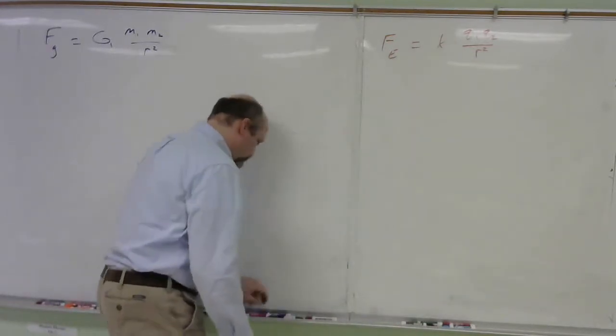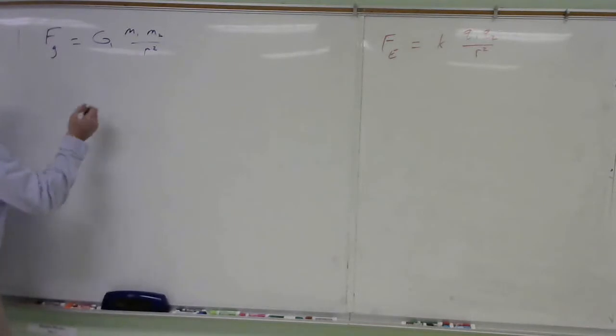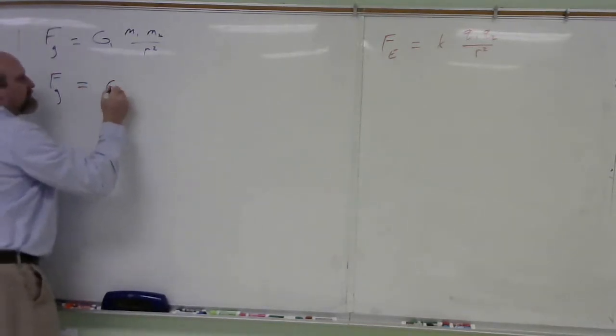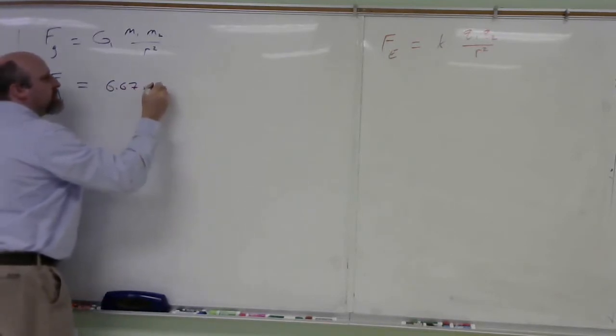Let's run through and do the gravitation calculation first. So I'm just going to substitute in my values. This is what we would call plug and chug. Big G, 6.67 times 10 to the negative 11.